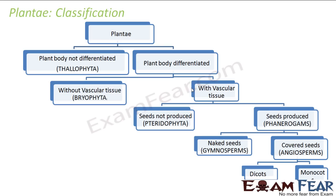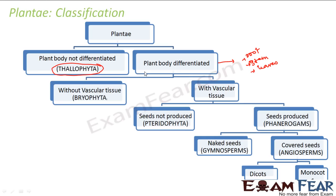Let us look at the different groups into which the Plantae kingdom was further classified. The first step was based on plant body differentiation. Plants whose body was not differentiated are known as Thallophyta — no distinct root, stem, or leaves. Plants whose body was differentiated into root, stem, and leaves formed another group. Among those with a differentiated body, there were again a huge number of plants, so they were further sub-classified into two types: those without vascular tissue and those with vascular tissue.